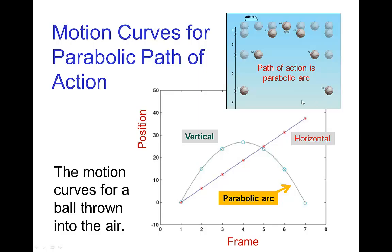In fact, if we have something that's flying through the air and we see the path of action, say this ball flying through the air has a path of action that's a parabolic arc. And then the motion curves in the graph editor, the motion curve for the horizontal position would be a straight line, but the motion curve for the vertical position is again a parabolic arc. Now, the parabolic arc of the path of action is not necessarily the same curvature as the parabolic arc in the motion curve.